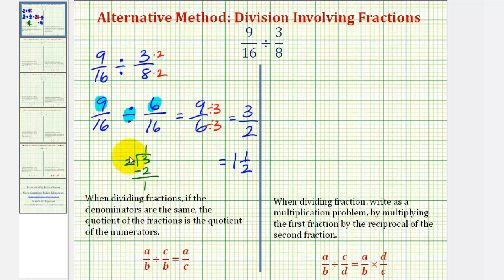Now let's also take a look at this quotient using the traditional algorithm. Where if we're dividing by c/d, we can write it as a multiplication problem by multiplying by d/c, which is the reciprocal. Meaning, this quotient is equivalent to 9/16 times the reciprocal of 3/8, which would be 8/3.